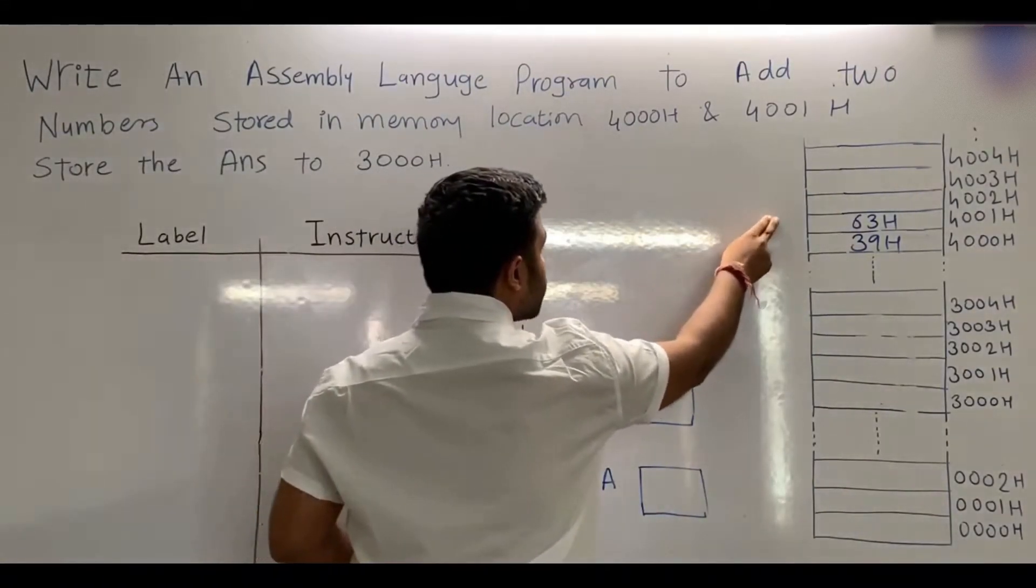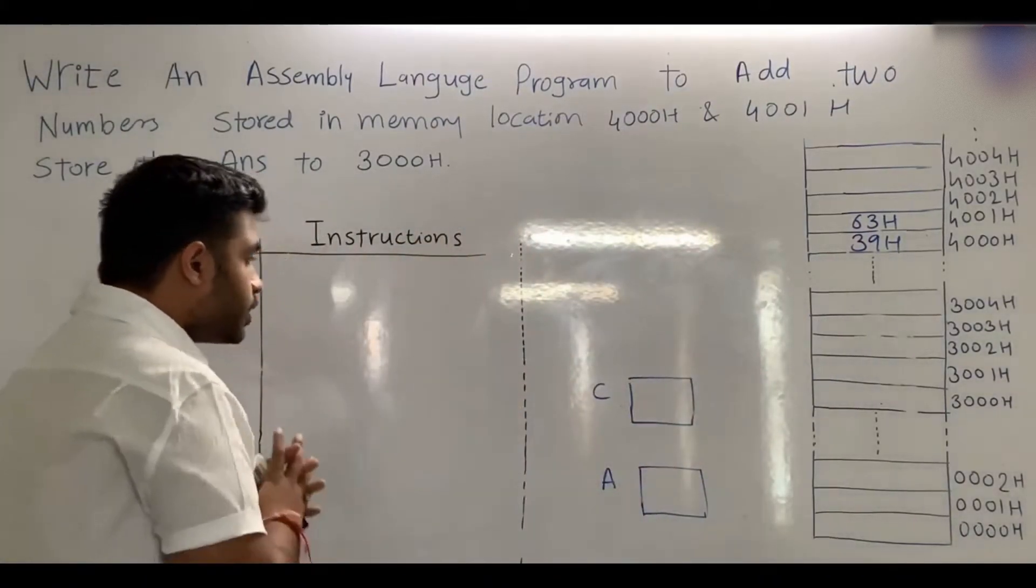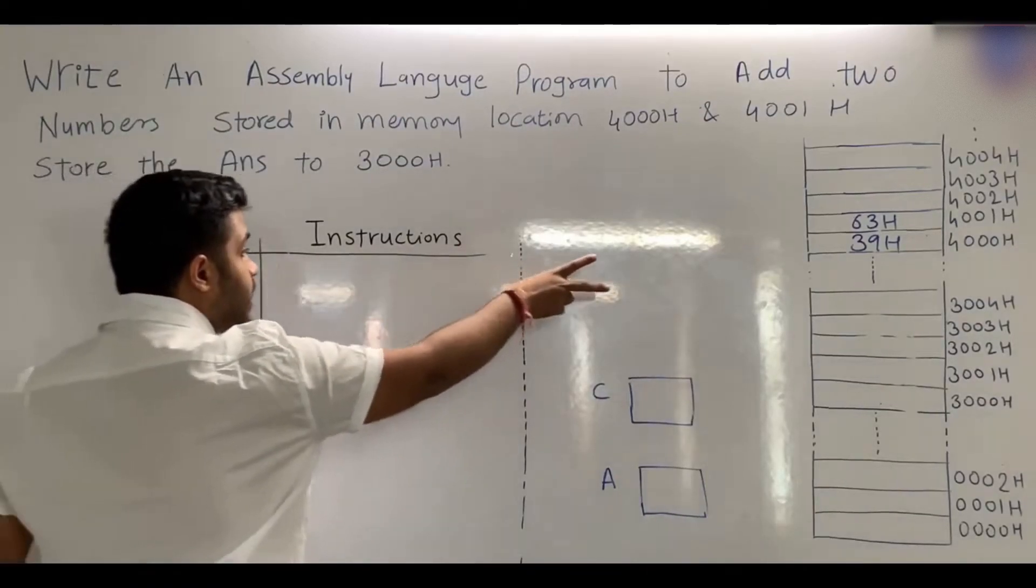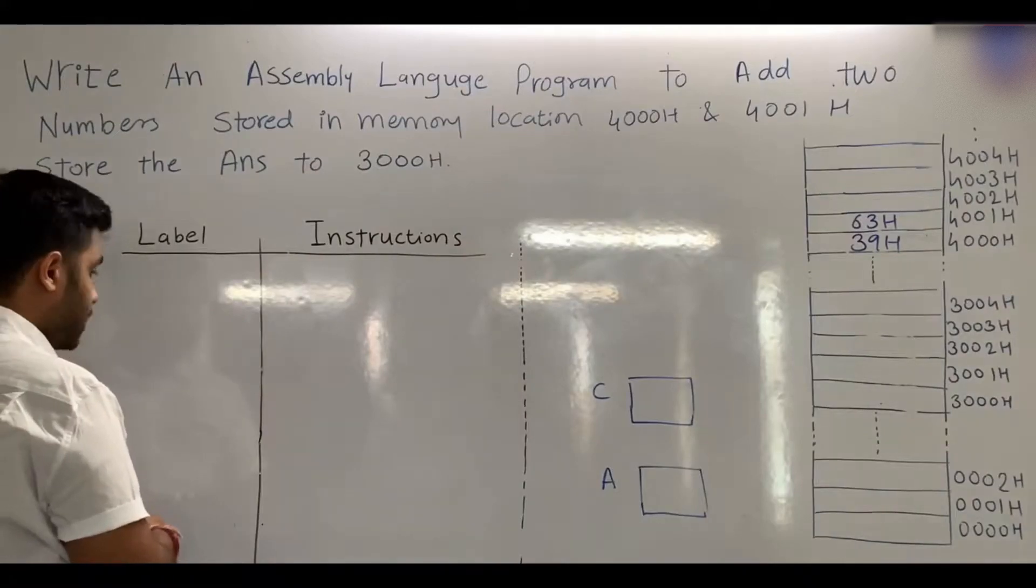In 4000H and 4001H, two data values are stored. We are asked to write an assembly language program to add these two numbers and store the answer in 3000H.